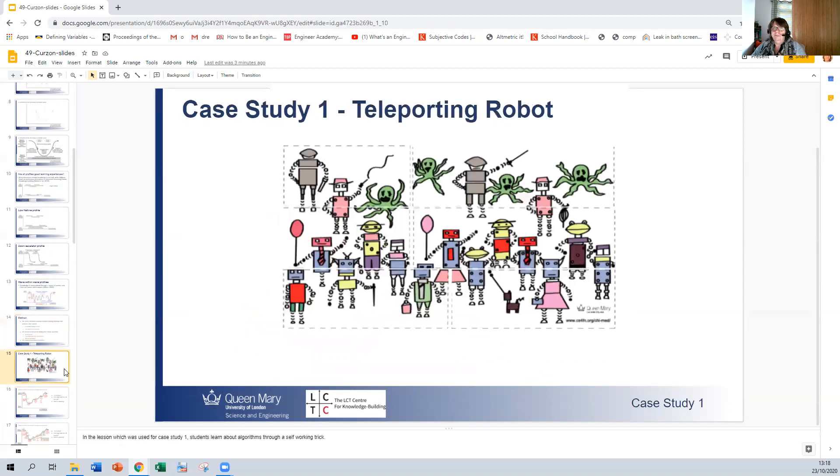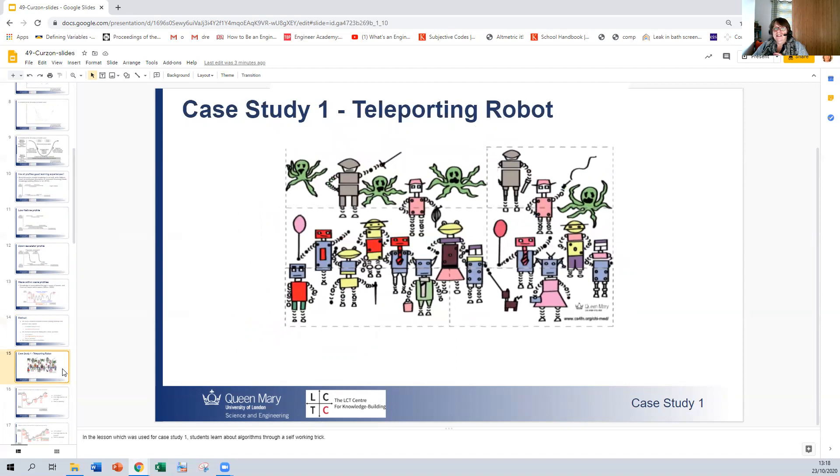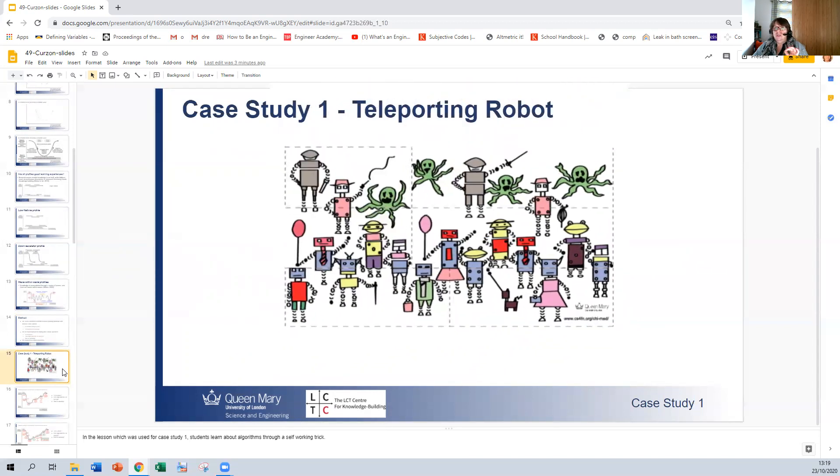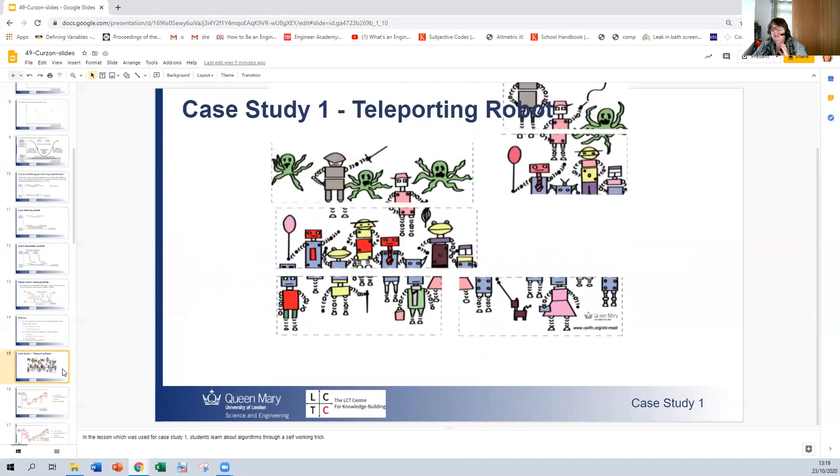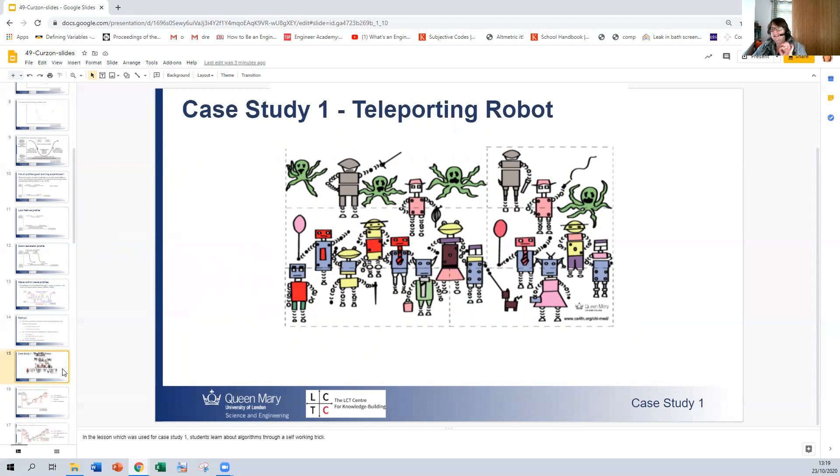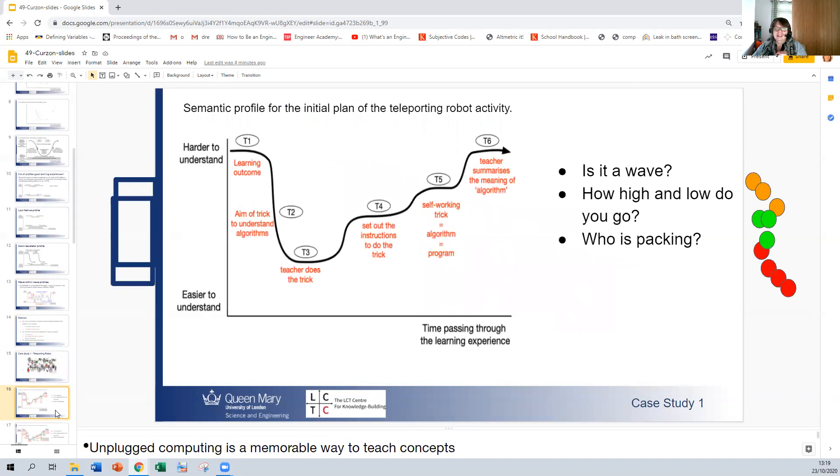So let's look at the two case studies. The first case study was on an activity called the teleporting robot. And what we're teaching here is about the concept of algorithms. And we're using a self working trick in order to teach students about it. We're going to look at the semantic profile that was drawn for this lesson. We're on slide 16. I'm going to show you how we might use our three questions in order to review the semantic profile.